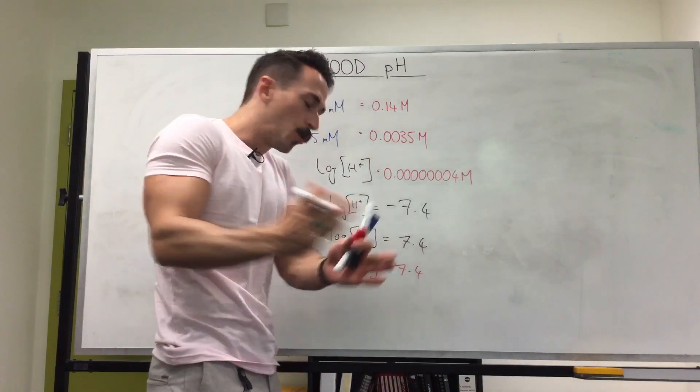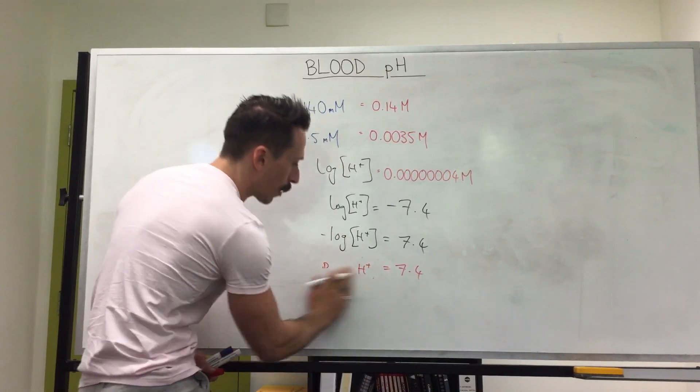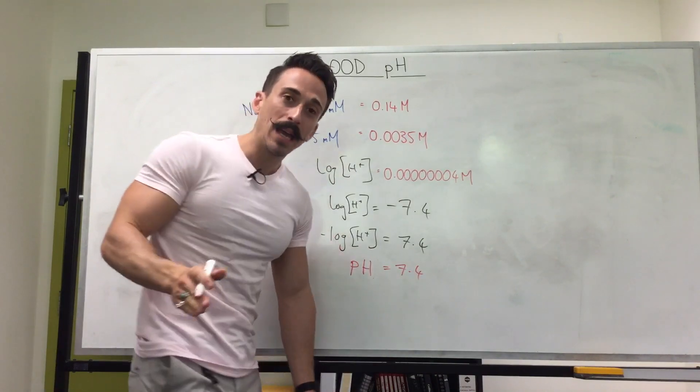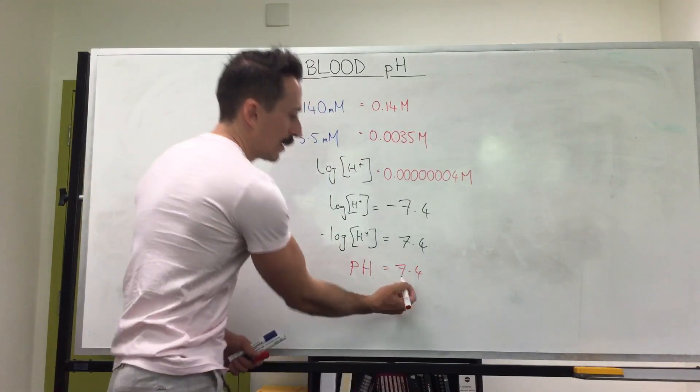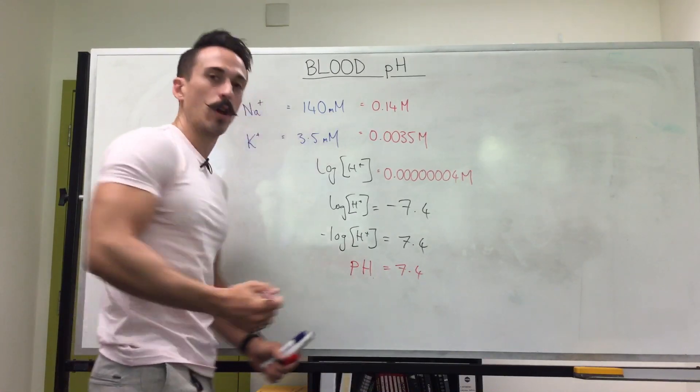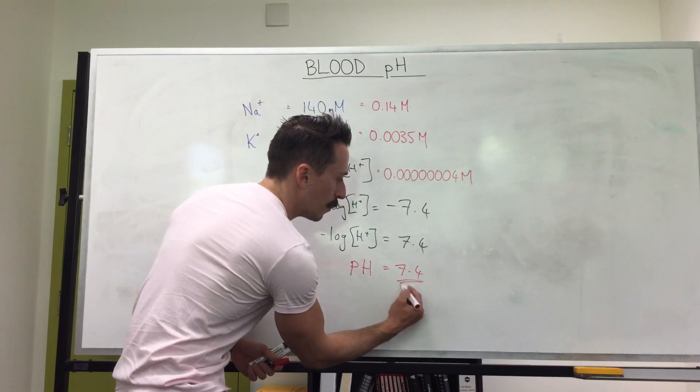So the power of hydrogen ion concentration is 7.4. And we can shorten this, we can get rid of that, and we can get rid of those brackets, and we can simply write it as pH. And the pH of blood is 7.4. The pH stands for the power of hydrogen ion. So the concentration of hydrogen ions in your blood is 7.4.